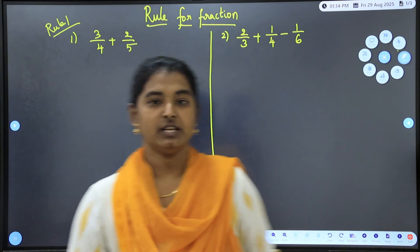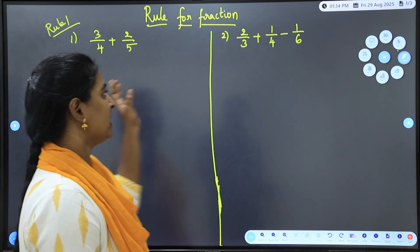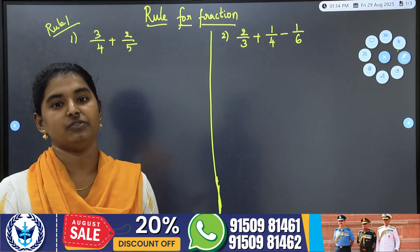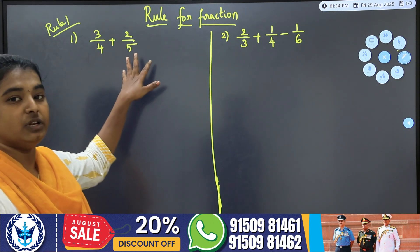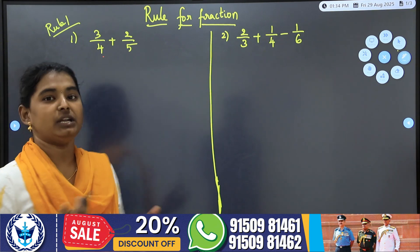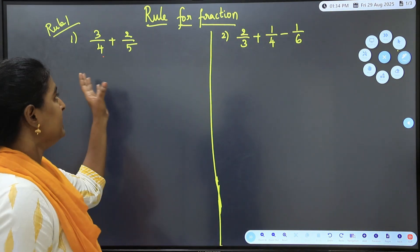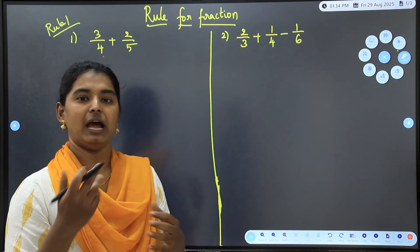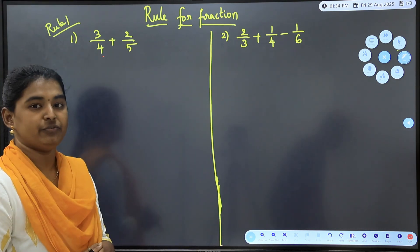The first rule is: when 2 or more fractions have a plus or minus sign between them, we will solve the question differently. In case the denominator is the same, we will add the numerators together. If the denominator is different, there are two methods.